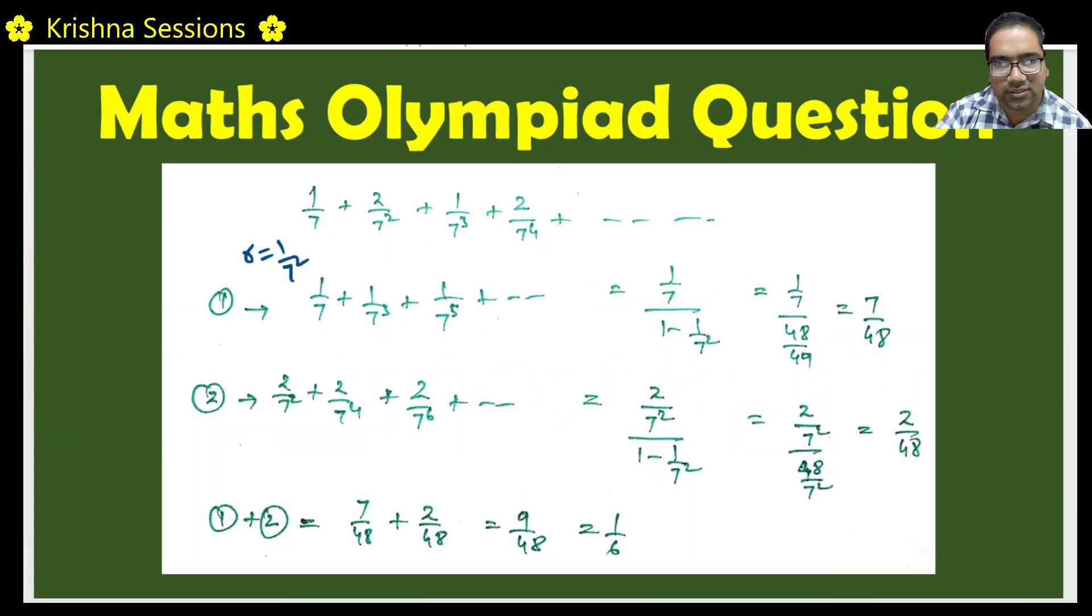For example, how to do this. Here let us pick the first term, third term, fifth term, seventh term, ninth term, etc. All the odd terms which they will have only one in the numerator. 1 by 7 plus 1 by 7 cube plus 1 by 7 power 5 plus whatever, whatever.